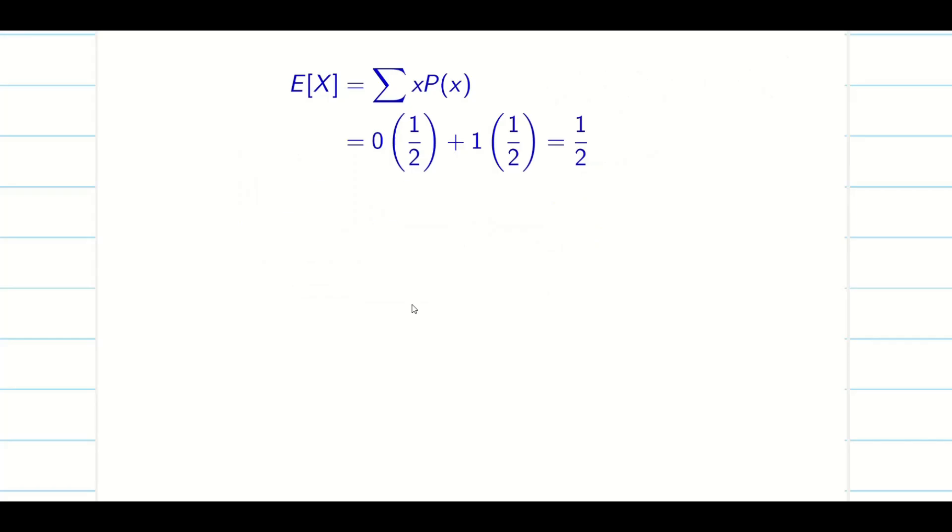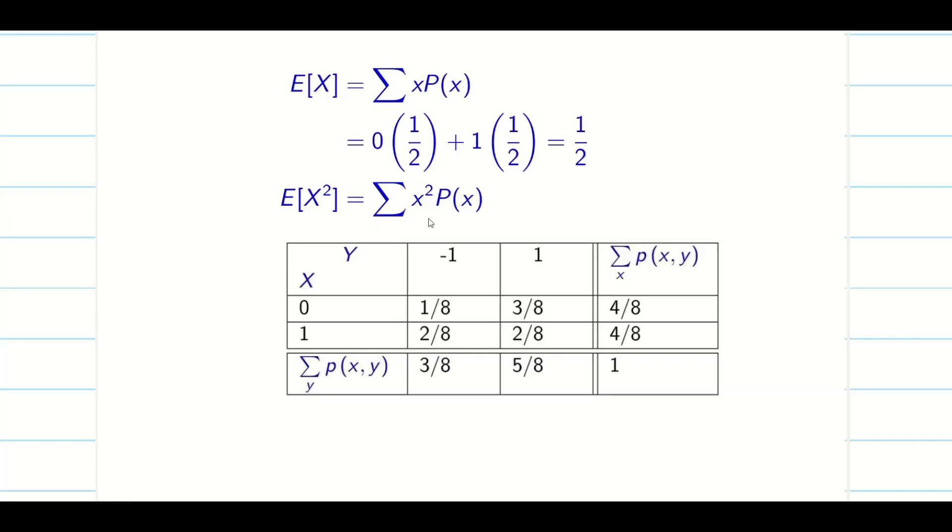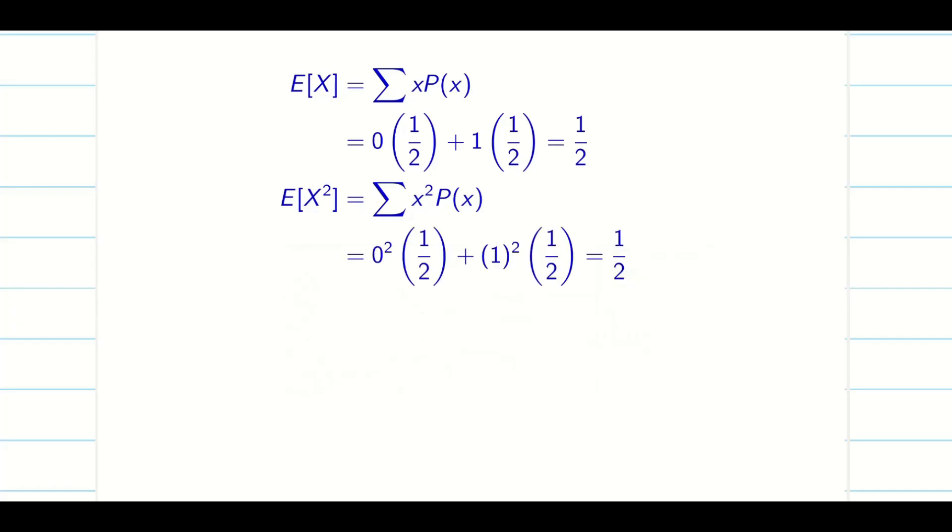Next we have to find E of X square. The same process. Instead of X, we are going to square the values of X. We take the table. It is going to be 0 square and 1 square. This remains the same. So we will get the answer again 1 by 2.